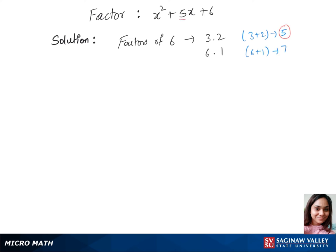with our middle term's constant, so we'll use the values three and two and plug them into the expression. That's (x + 3)(x + 2), and these are the factors, which is our final answer.